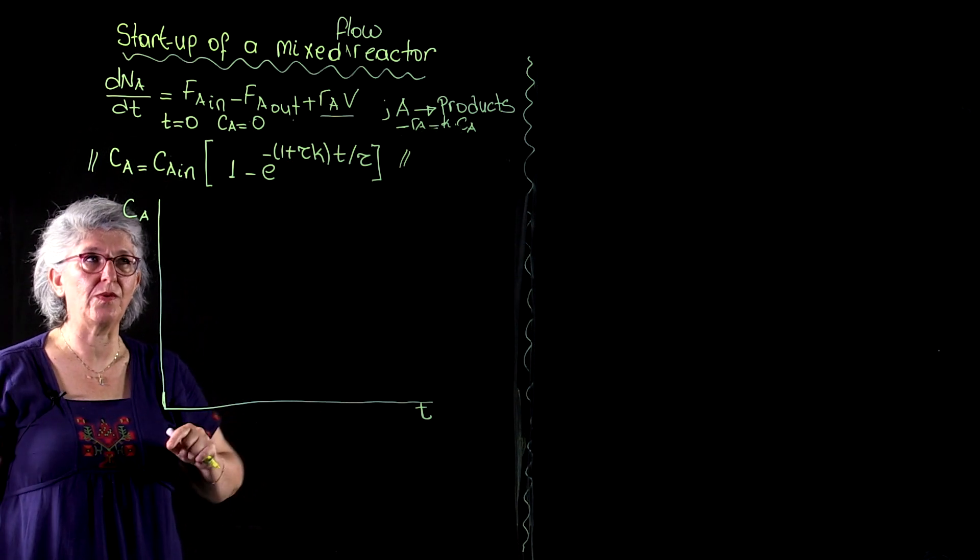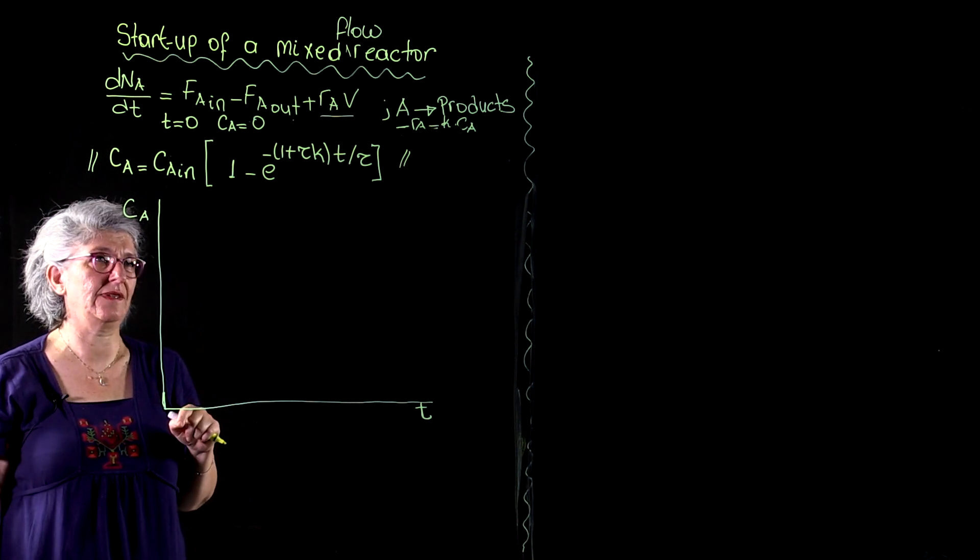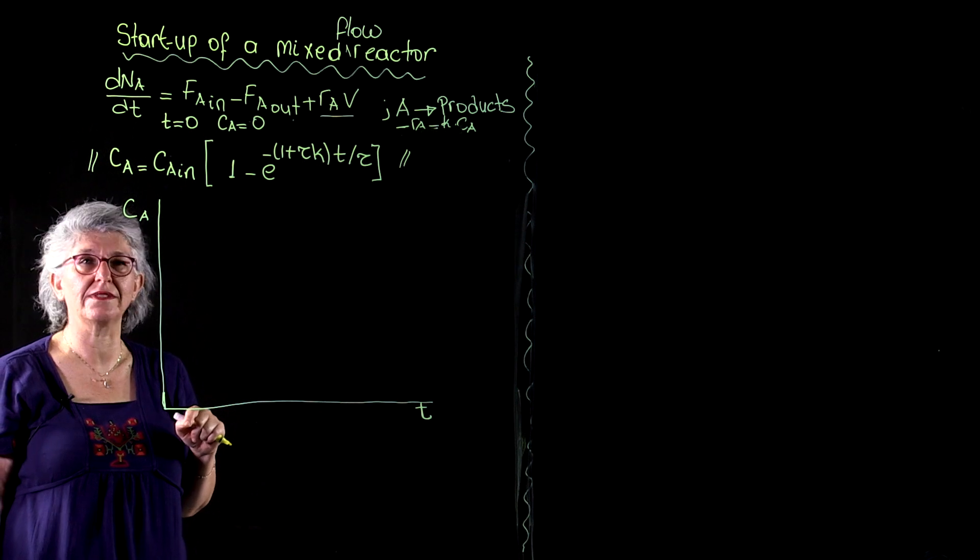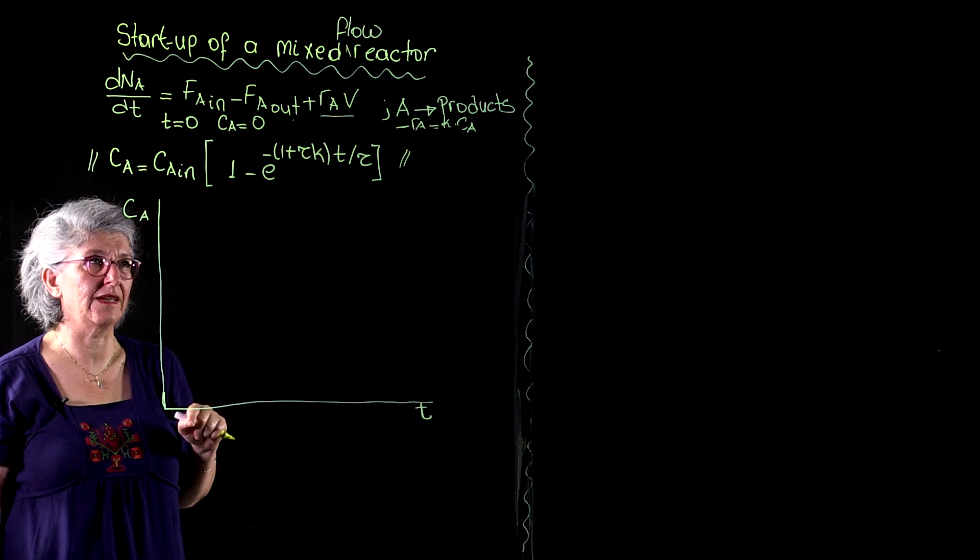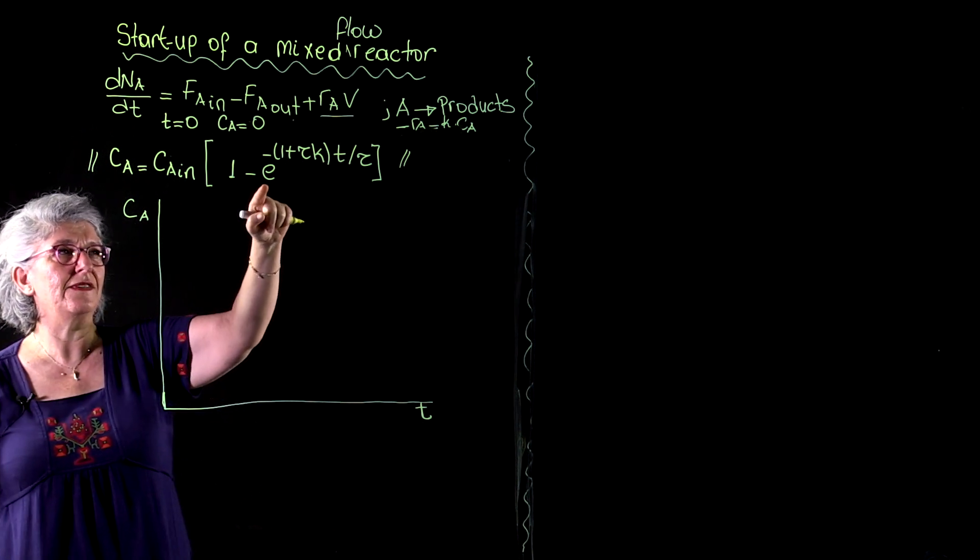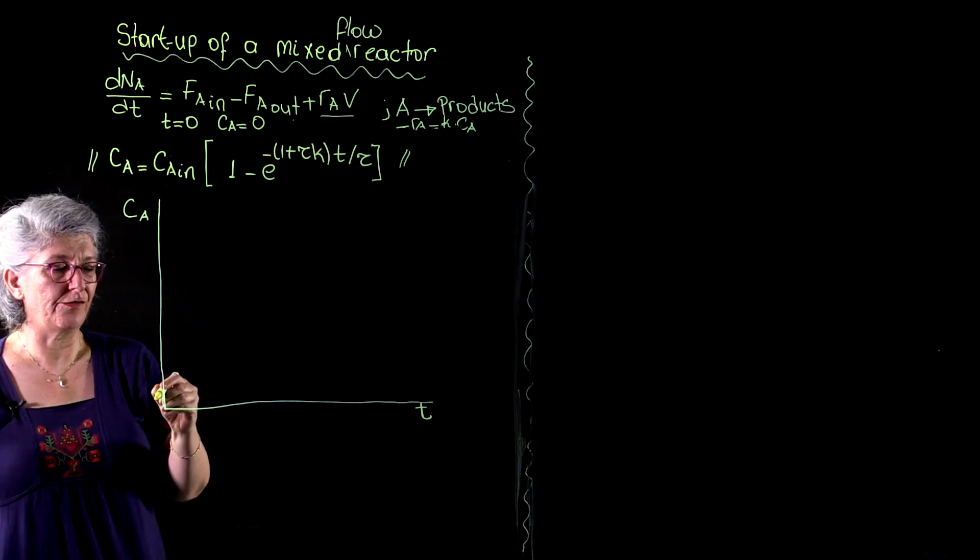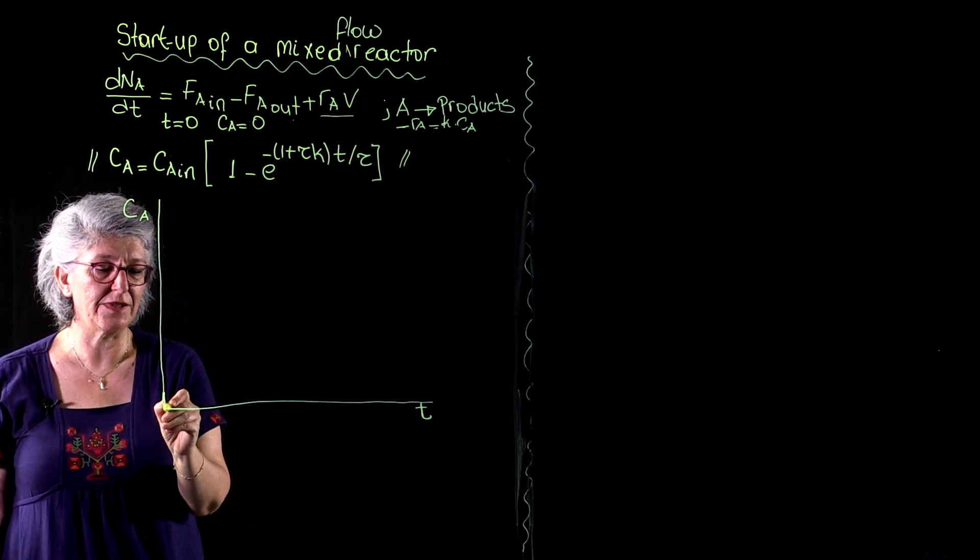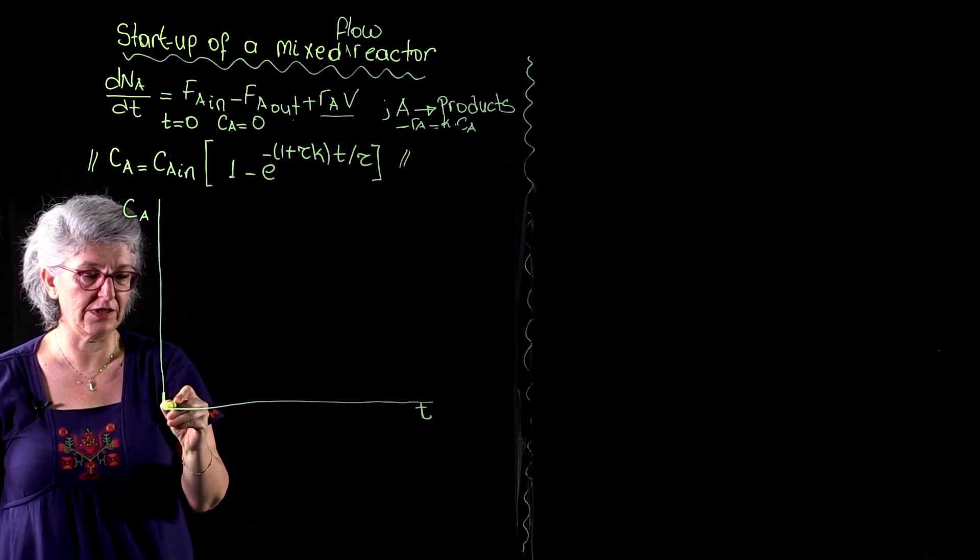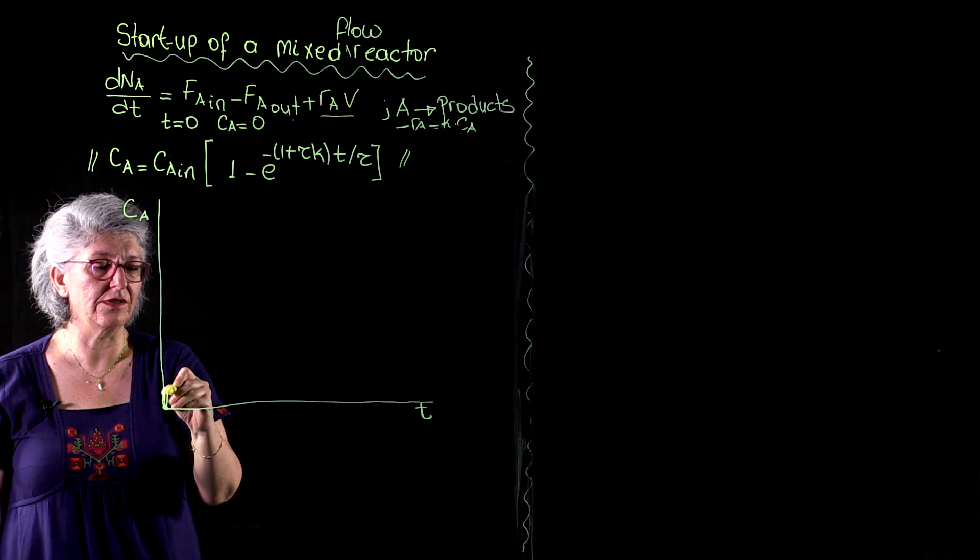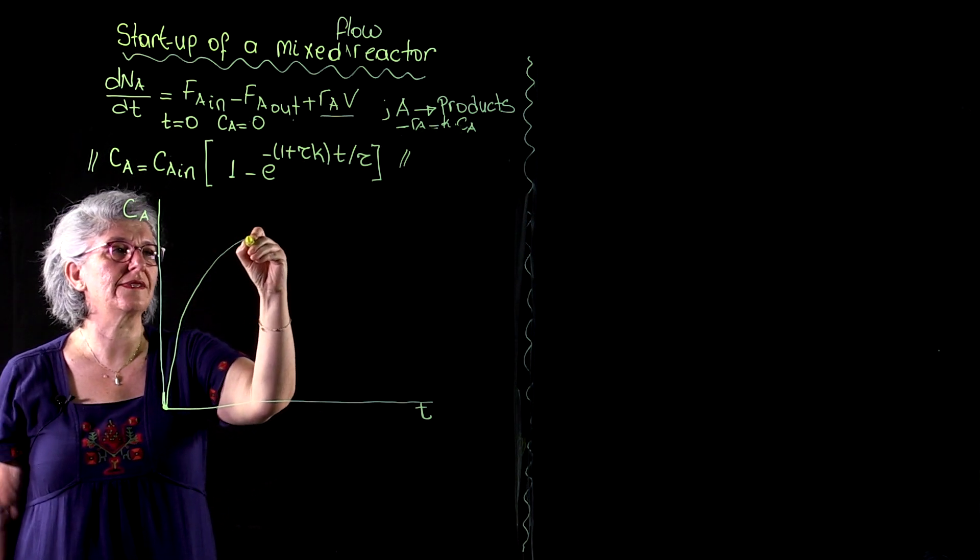And observe what is the effect of each of these parameters on the time evolution of species A through the reactor. Now, we are going to have an exponential evolution of concentration A. At time t equals 0, CA equals 0. That is our initial condition.